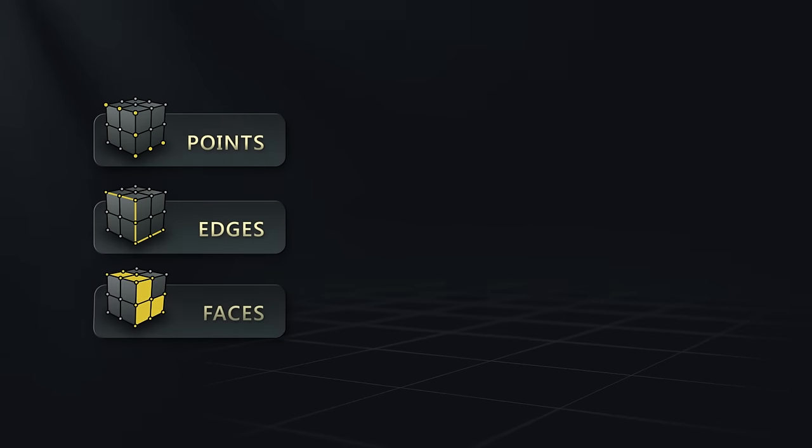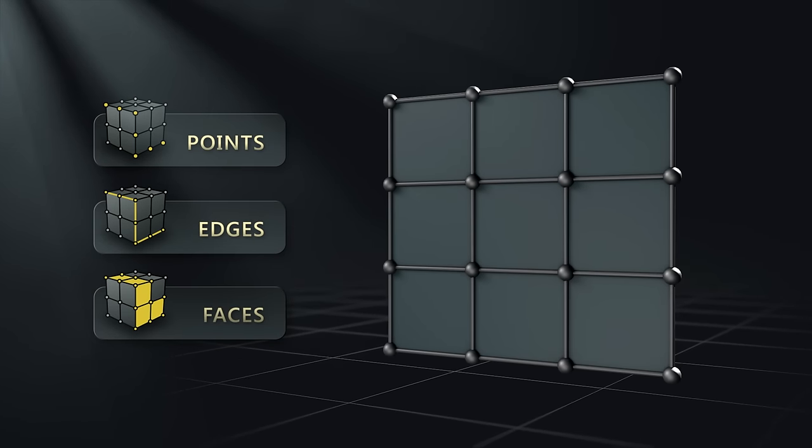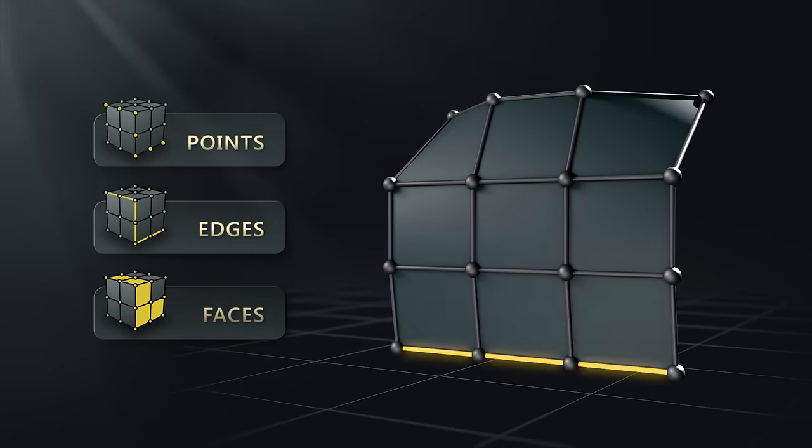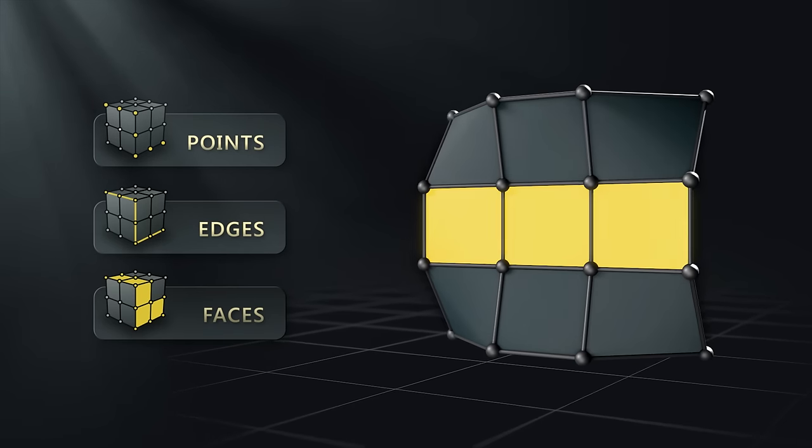Modeling in 3D software is done by manipulating these three main elements: points, edges, and polygons or faces.